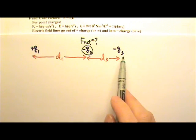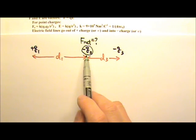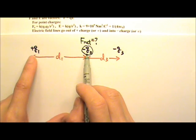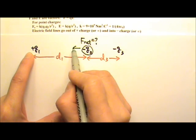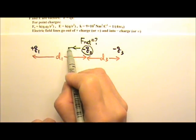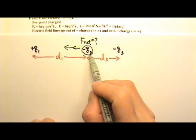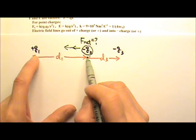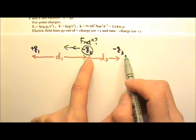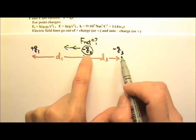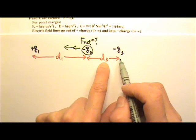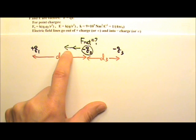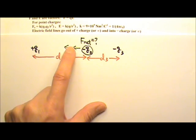Let's say we have three point charges and we want to find the net electric force acting on one of them. There are two electric forces acting on this charge — one attractive and one repulsive. We can do KQ1Q2 over R squared to find each force, and then add them together if they are in the same direction, or do the bigger side minus the smaller side if they are in opposite directions.